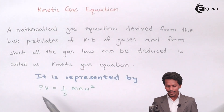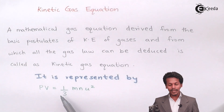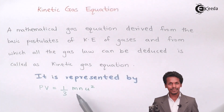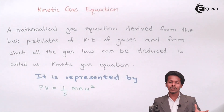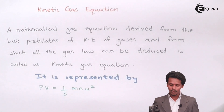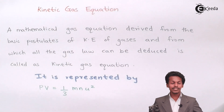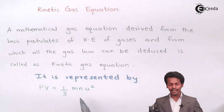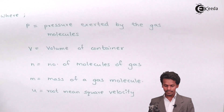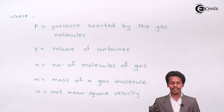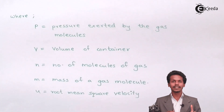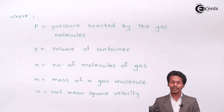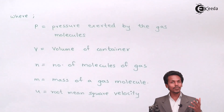The kinetic gas equation is represented as PV = 1/3 mnu², where P is the pressure of the gas kept constant throughout the container, and V is the volume of the container in which the gas is kept. P is the pressure exerted by the gas molecules in a fixed volume of a particular container, and V is the volume of that container.